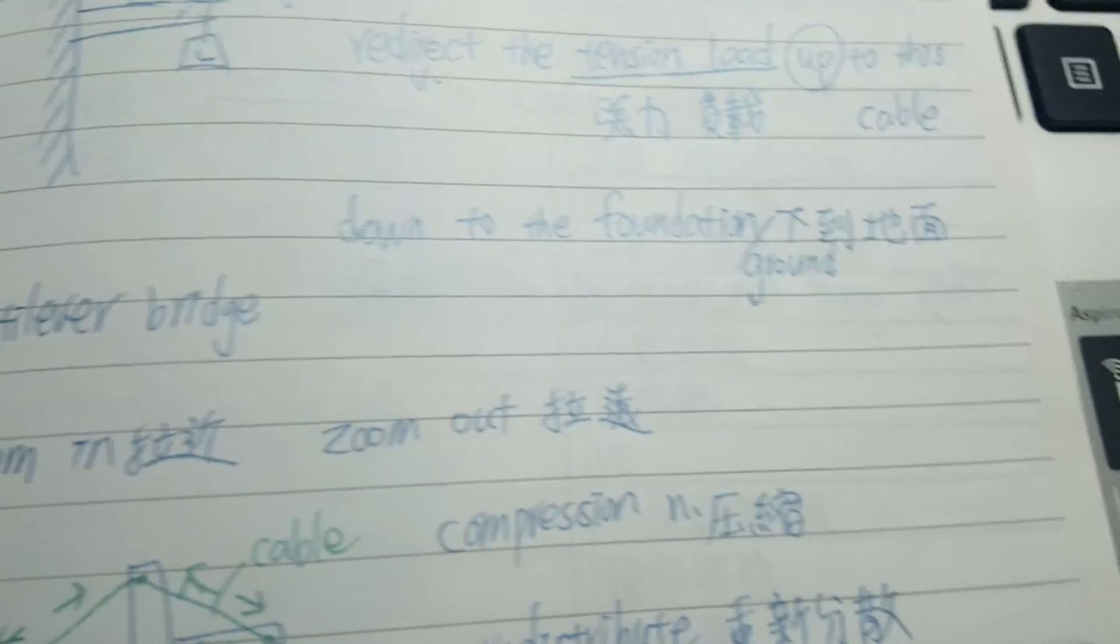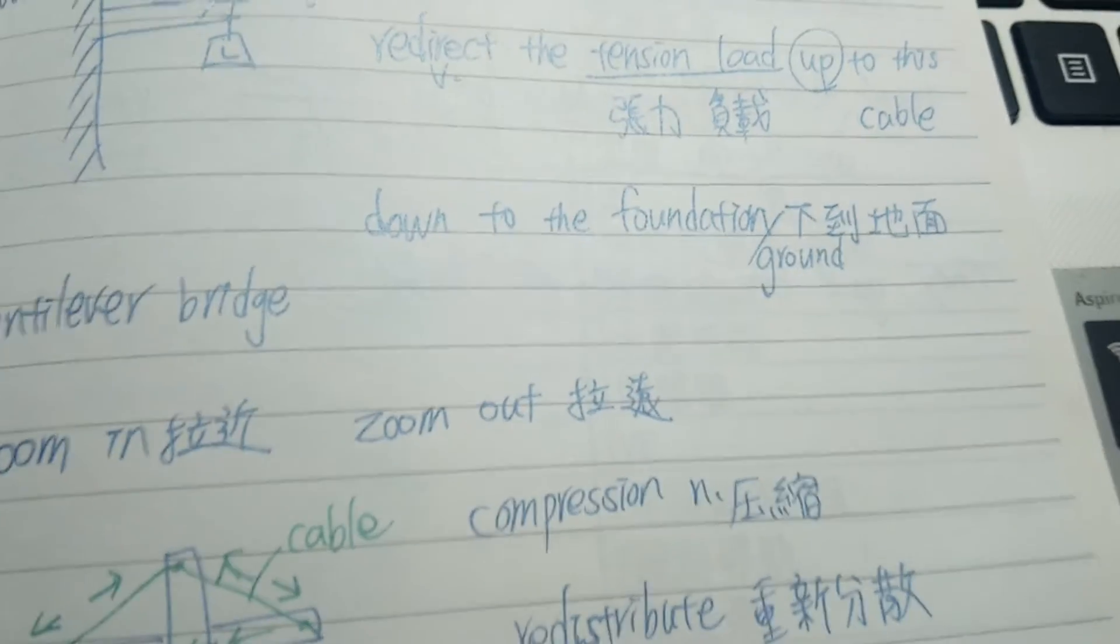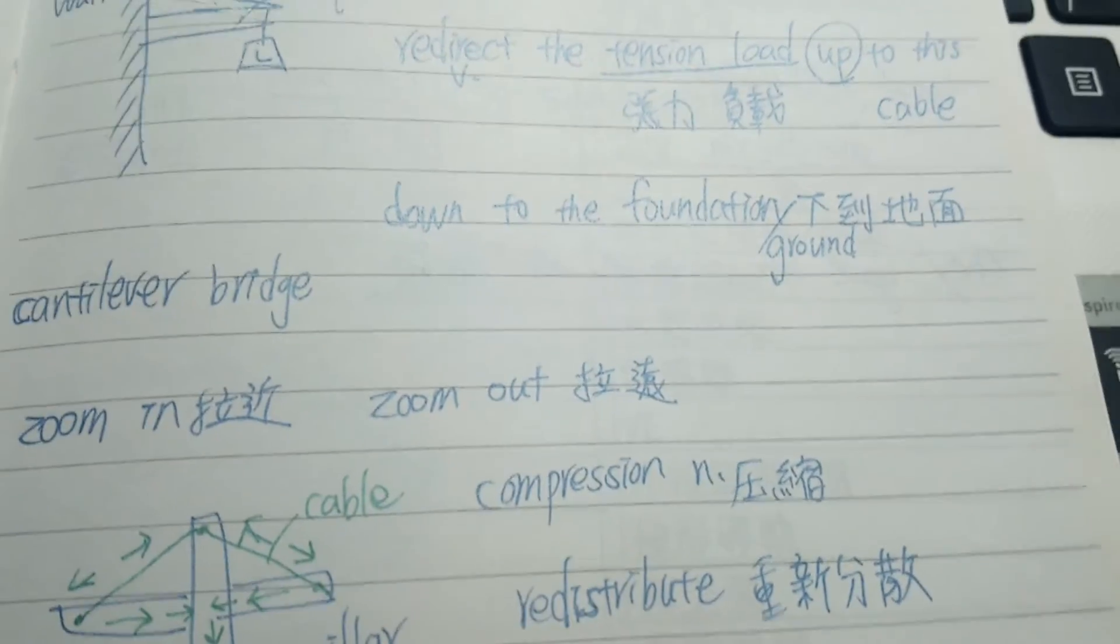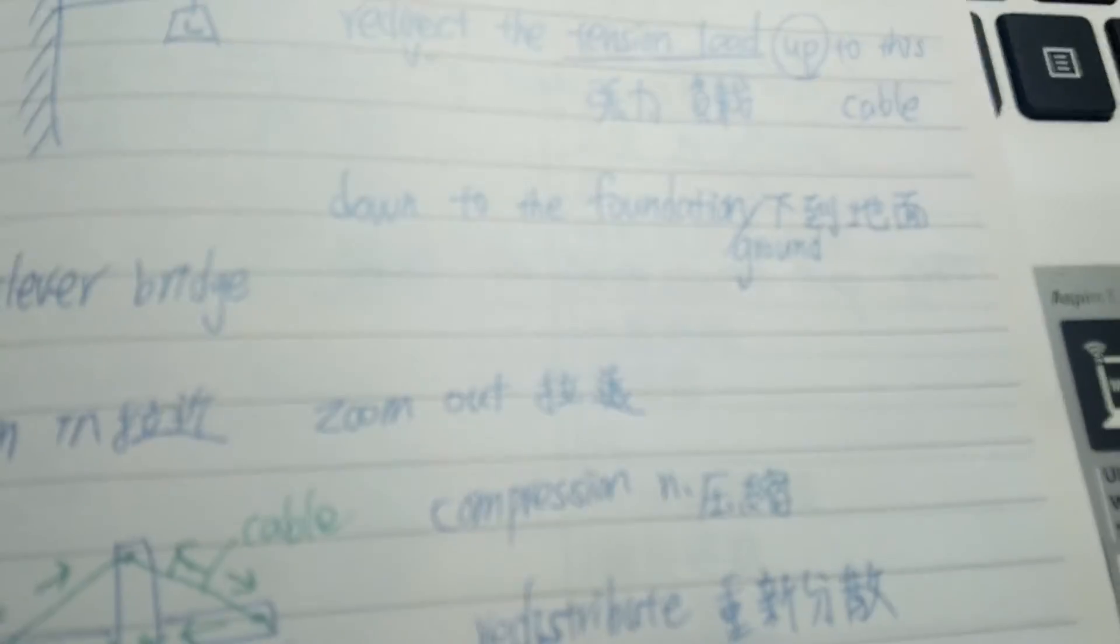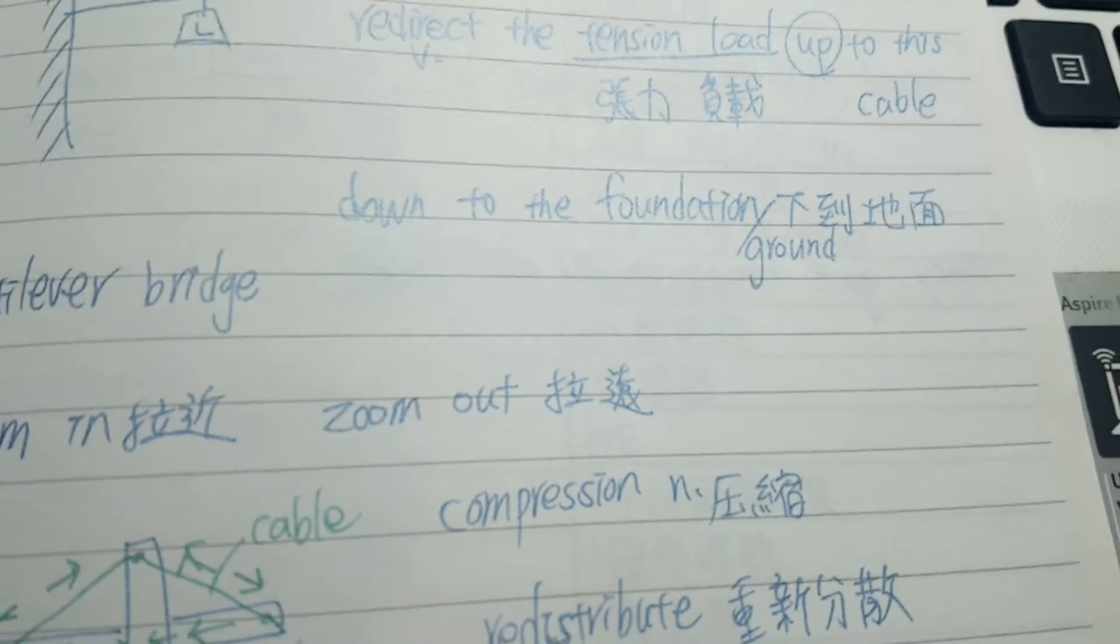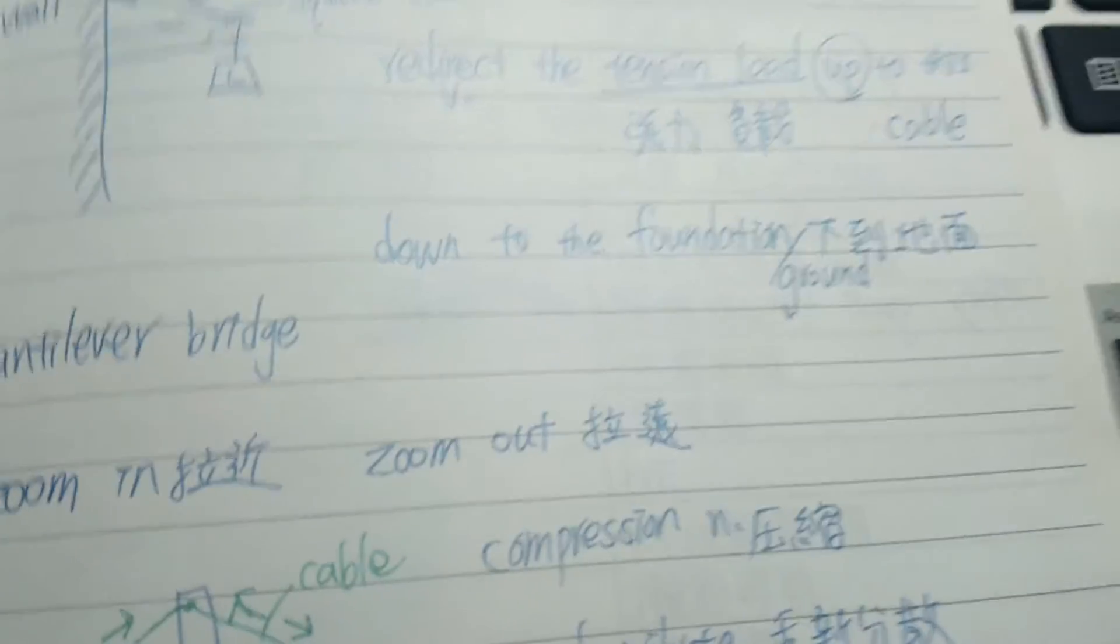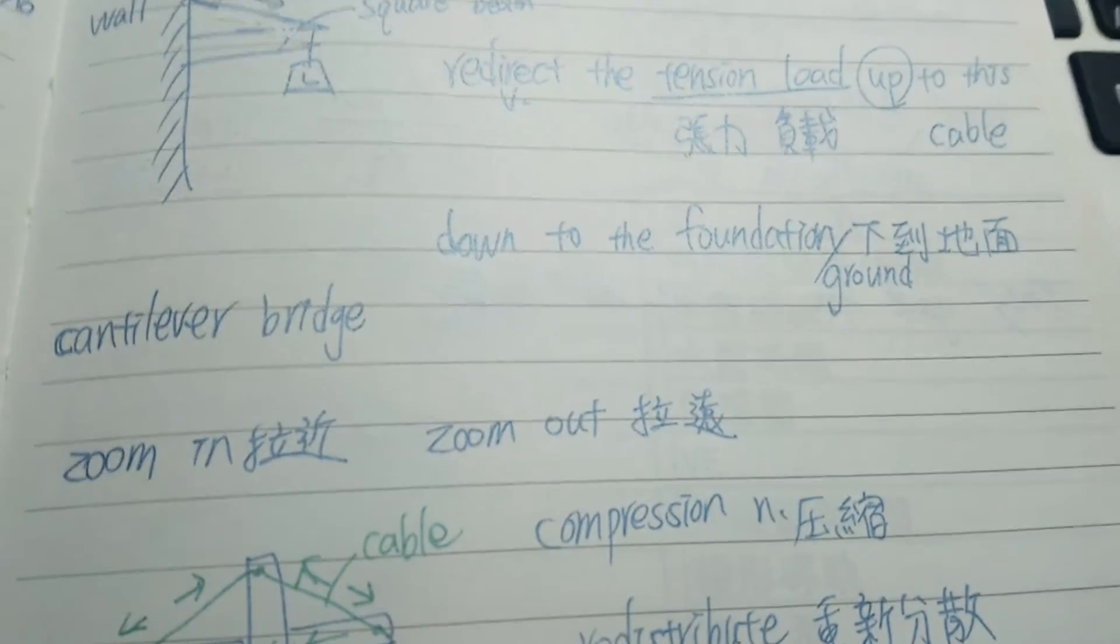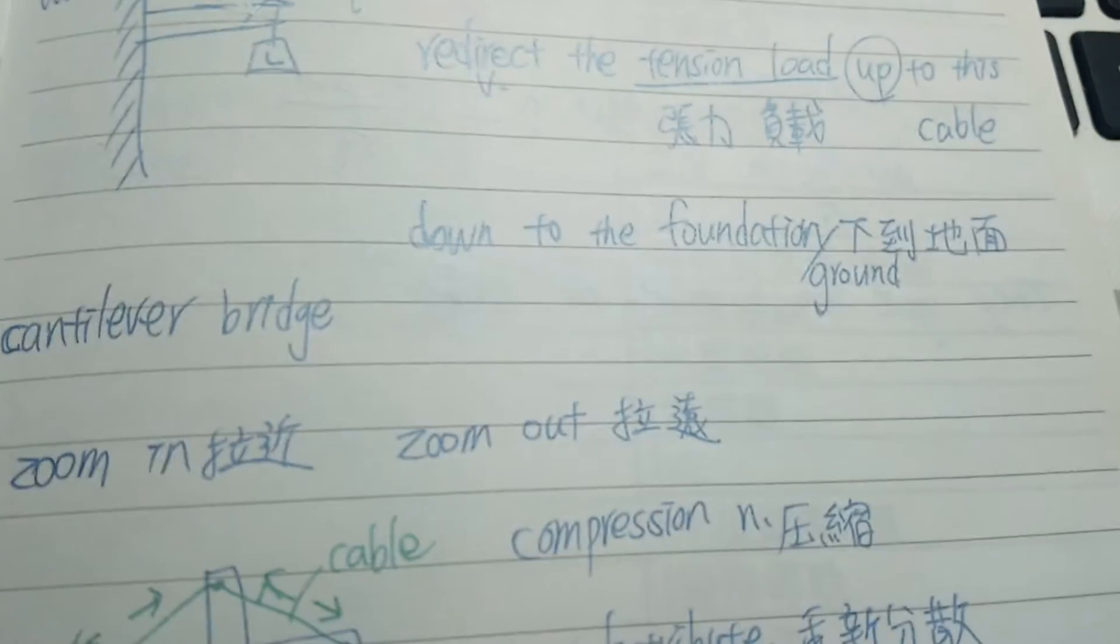If,如果 your beam is bending alarmingly under the load. 如果啊,在這個負載之下,你的橫梁它非常,它很大幅度的彎曲了. That you wanted to support. 然後你又想要支撐的話, Then you can generate a somewhat more complicated cantilever. 好,那你就可以再弄出一個,就是稍微再複雜一點的懸臂. And that's going to look like this. 然後它大概是長這個樣子.